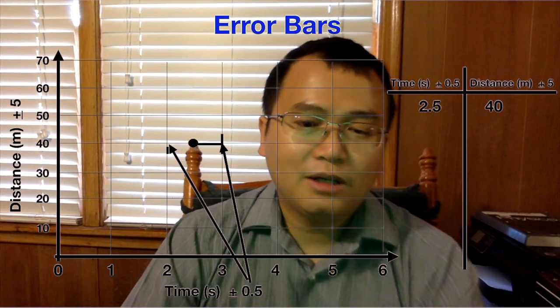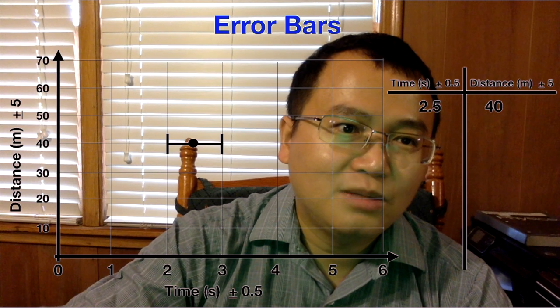Uncertainty of plus or minus 0.05 seconds, so I draw a bar that represents that. The uncertainty for the distance is plus 5 meters, so let's create that.